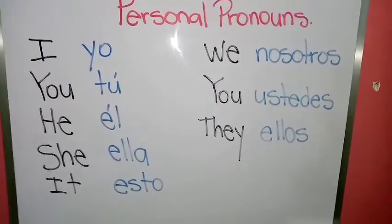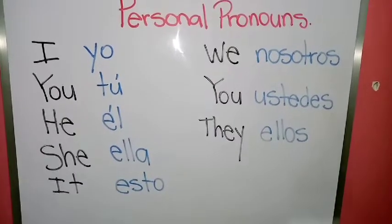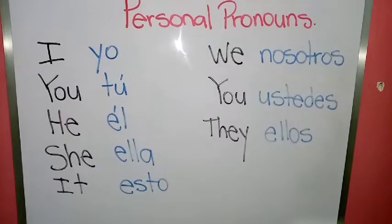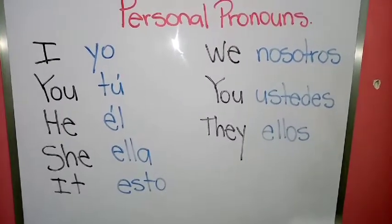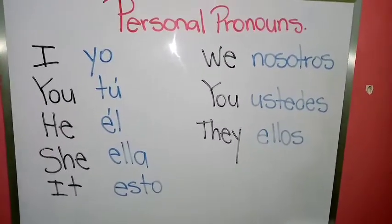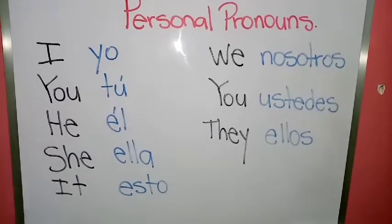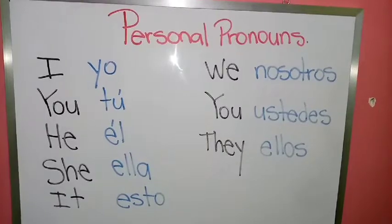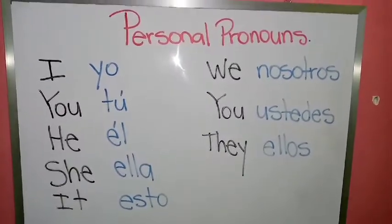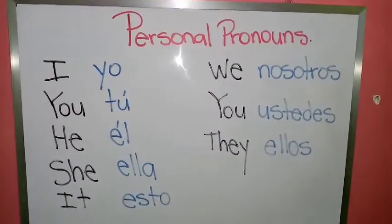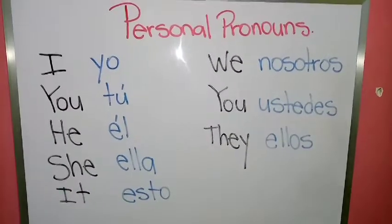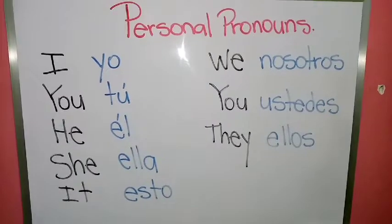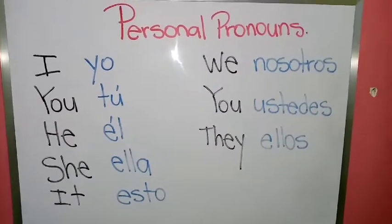Son plural porque mencionan más de dos personas. El I, you, he, she, and it es: yo, tú, él, ella, esto. En el we, you, they ya es: nosotros, ustedes y ellos. Solo se los puse por si tuvieran alguna duda, para que los vieran, porque ya saben que no vamos a trabajar con traducciones. Además, en la hoja número 5 del folleto, ahí lo tenemos ilustrado.